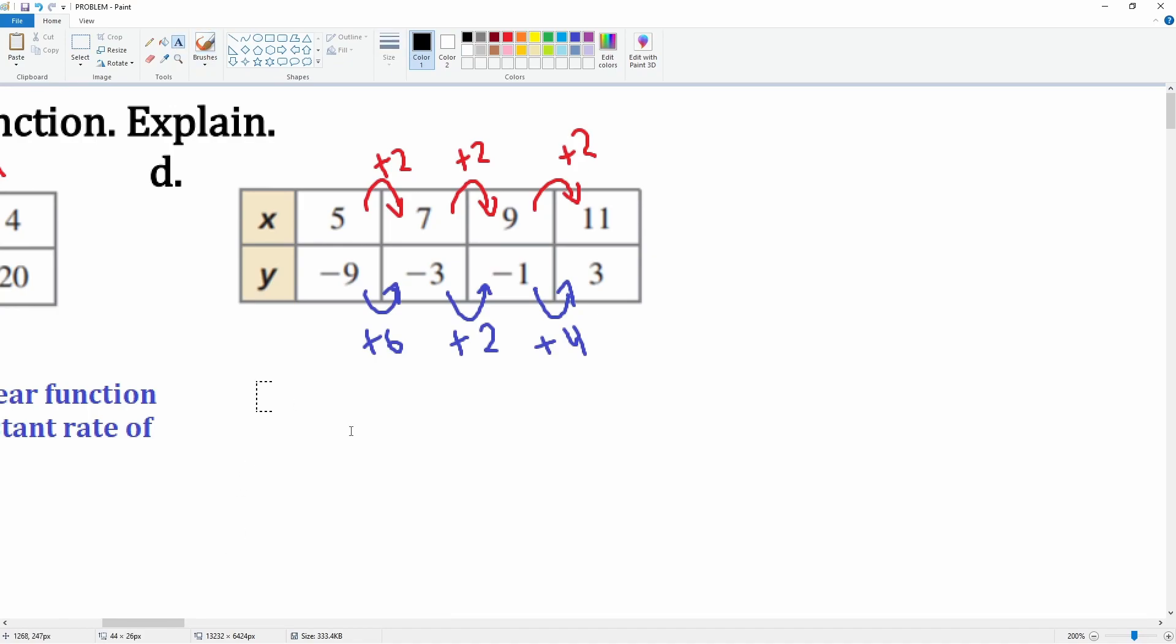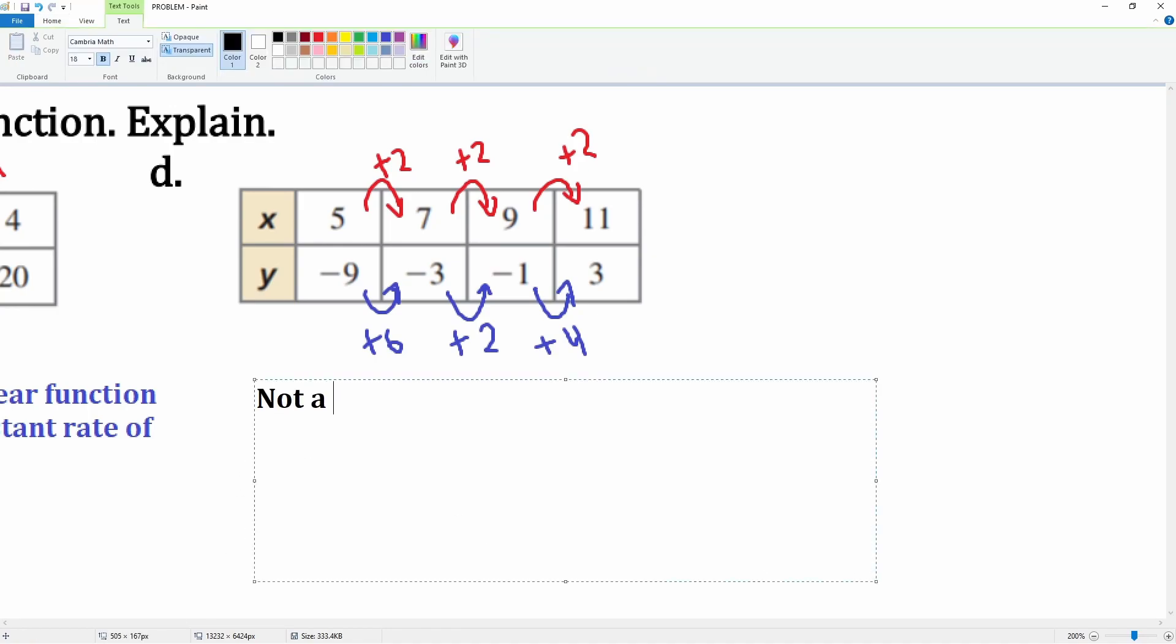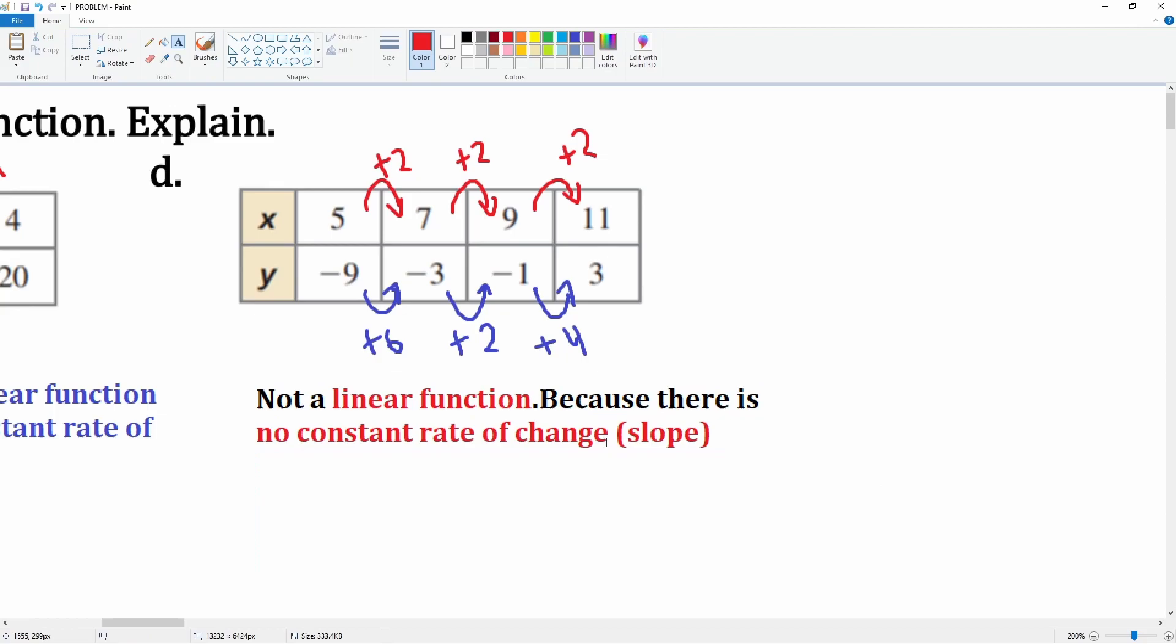This is definitely not a linear function because there is no constant rate of change or slope here. It is not a linear function because there is no constant rate of change. That's the explanation.